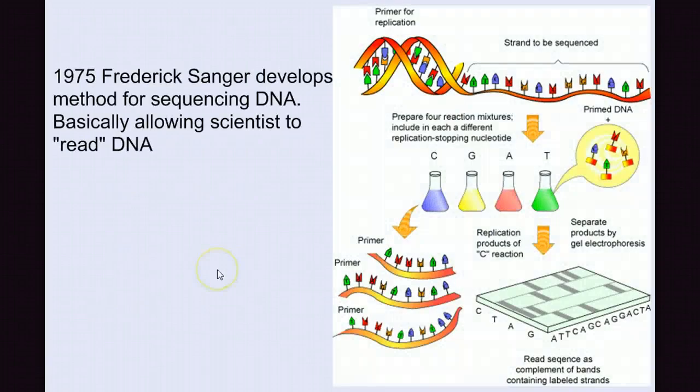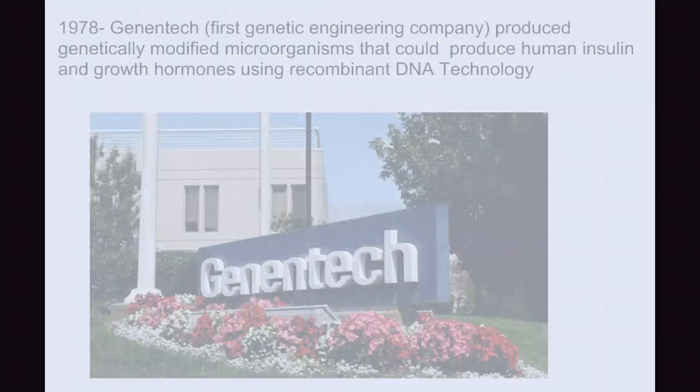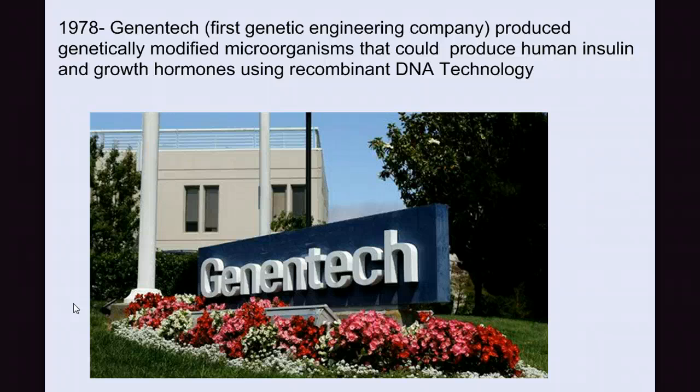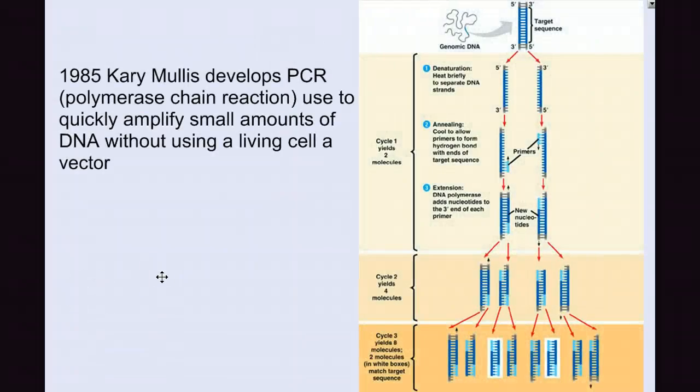In 1975, Frederick Sanger developed a method for sequencing DNA, basically to allow scientists to read DNA. Shortly after, in 1978, Genentech, the first genetic engineering company, produced genetically modified microorganisms that could produce human insulin and growth hormones using recombinant DNA technology. And in 1985, Kary Mullis developed PCR or polymerase chain reaction, which we can use to make millions of copies of small amounts of DNA without using a cell as the tool, as the factory.